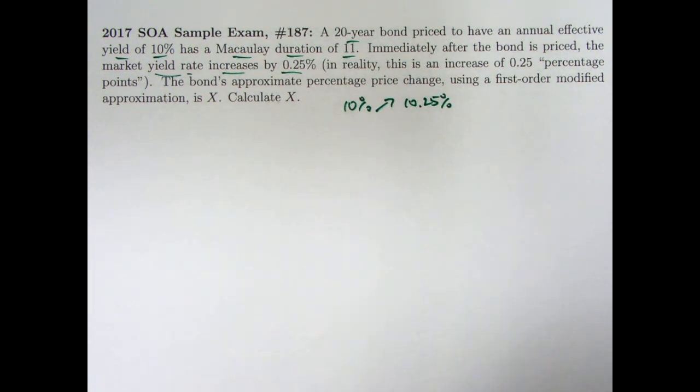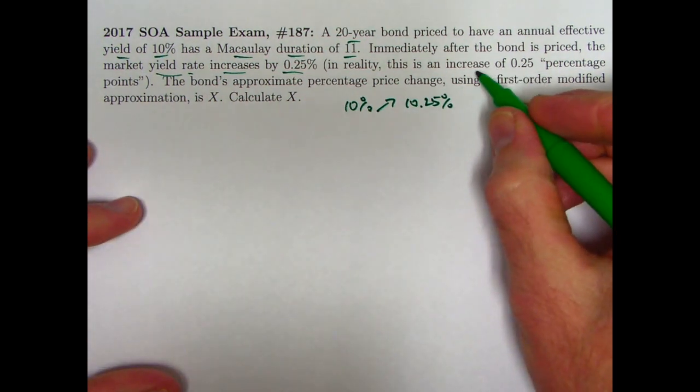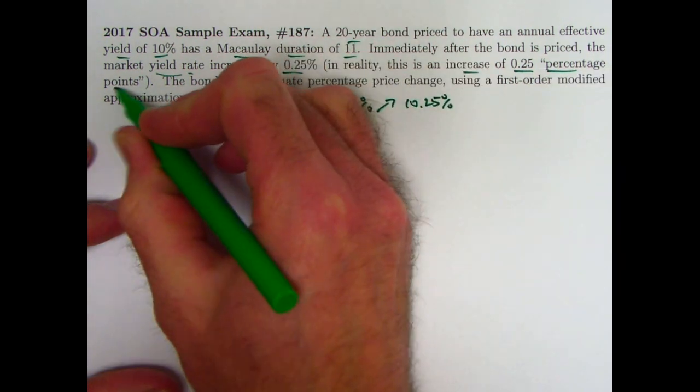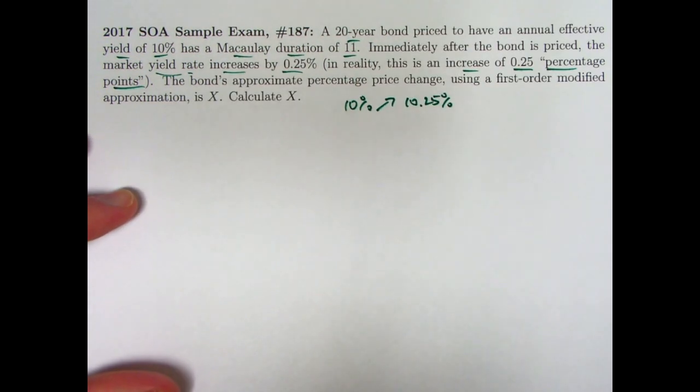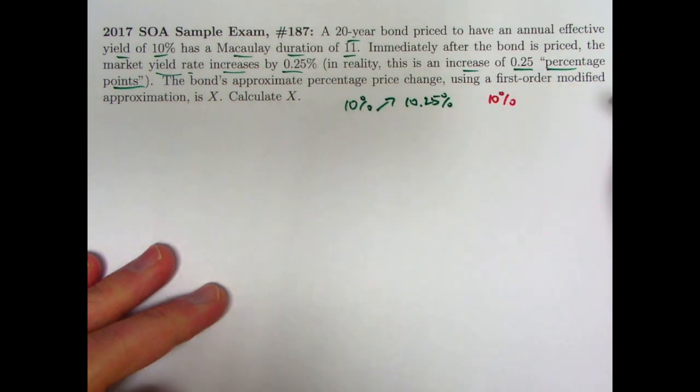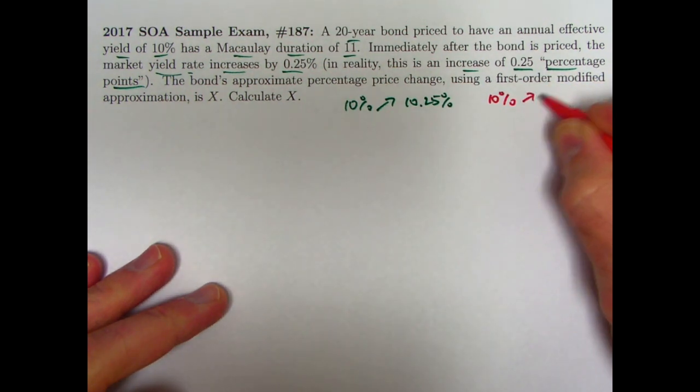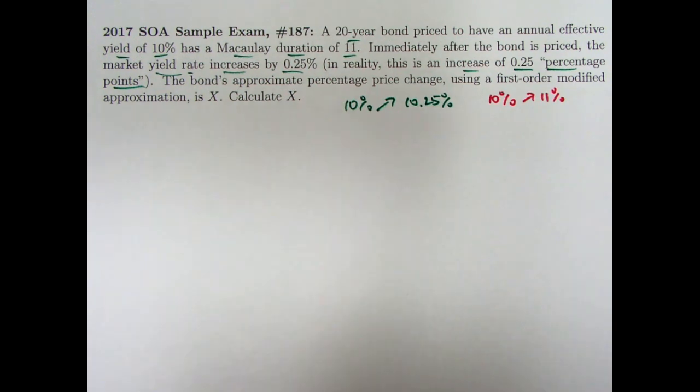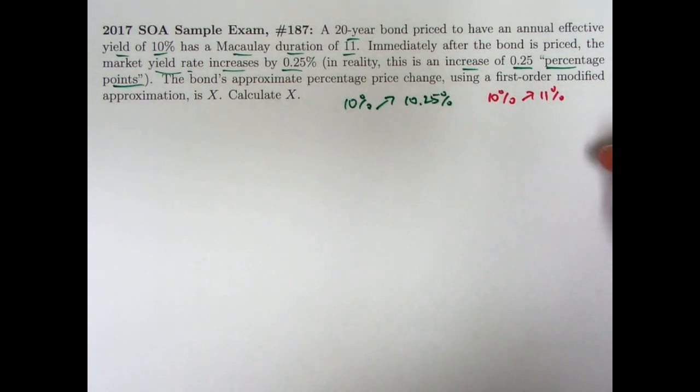In reality, however, that's a little bit misleading. It's really what you would call an increase of 0.25 percentage points, rather than a 0.25% increase. Let's think of an analogy here with a simpler case. If the percent yield on the bond went from 10% up to 11%, that's actually a 10% increase in the yield rate. 1% is 10% of 10%. However, more typically, this is called a 1 percentage point increase.